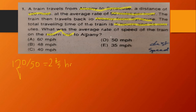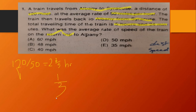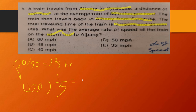Since the total traveling time was five hours and twenty-four minutes, it must have taken the train three hours for the return trip from Syracuse to Albany. Since the distance traveled is 120 miles, the average rate of speed is 120 divided by 3 hours, which equals 40 miles per hour.